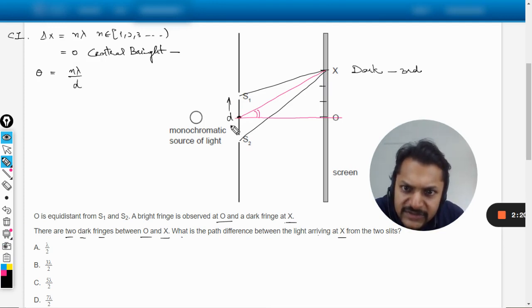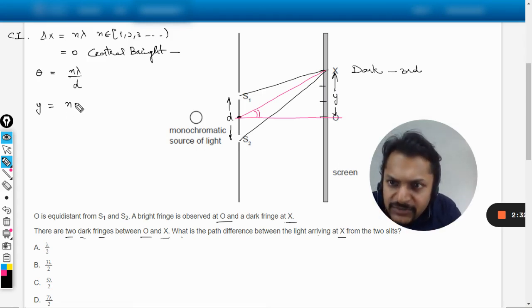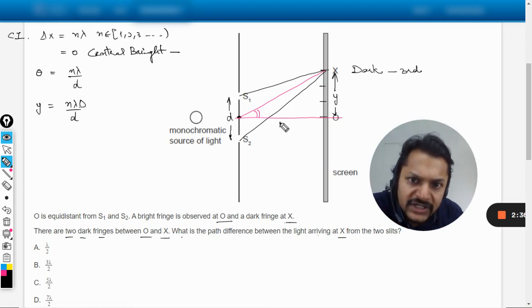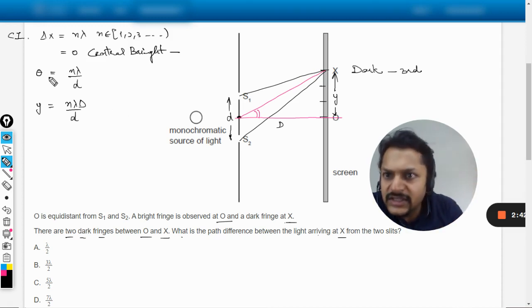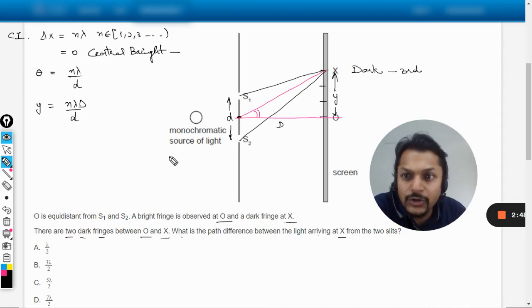Small d is the distance between the two slits. Now the third thing is position, taken as y. This distance I'm taking as y, and in many IB examinations they have also chosen this as y only. This comes out to be n lambda capital D divided by small d. Capital D is the distance between the screen and the slits. So these are the three formulas related with constructive interference.